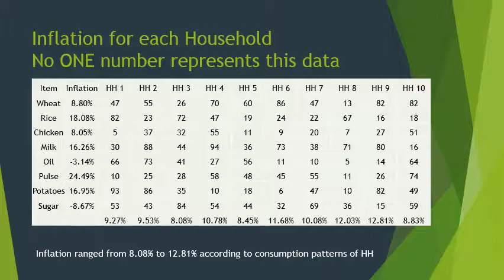These 10 inflation numbers have an average, but that average doesn't really describe any household. A better way to look at this data set is to say that these 10 households experienced inflation ranging between 8.08%, which is the minimum, to 12.81%, which is the maximum, according to their consumption patterns.